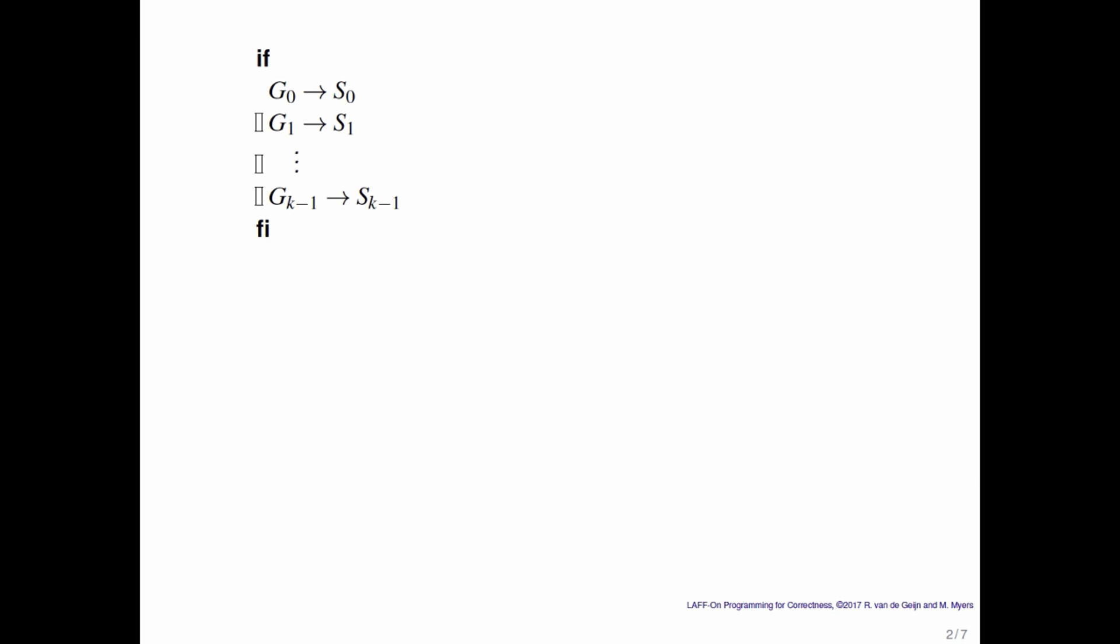And then each of those particular lines we call a guarded statement or a guarded command. So what do we have? Well, if gi holds, then you may execute si.